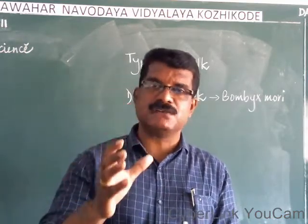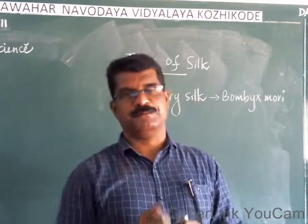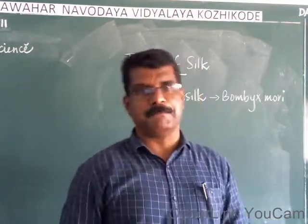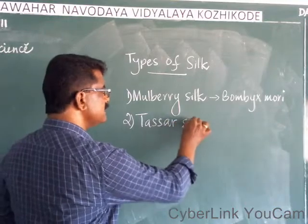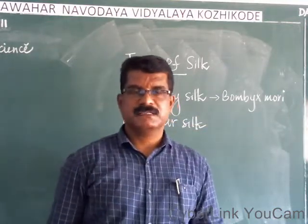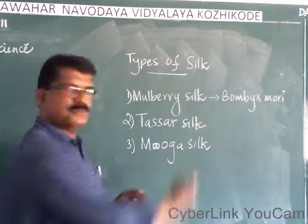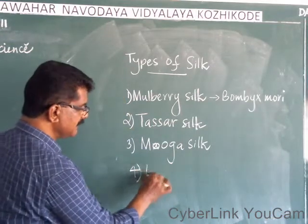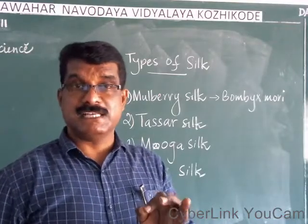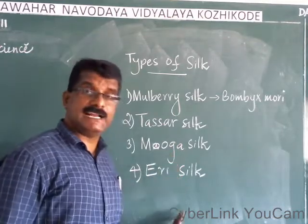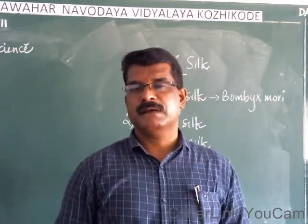Mulberry silkworms are the most cultivated silkworm in the world. About 90% of the silk production is from mulberry silkworm. Its scientific name is Bombyx mori and it eats the mulberry leaves of the Morus alba plant. The second type is tassar silk, third is muga silk, and fourth is eri silk. So these are the four types of silk.